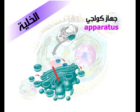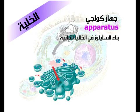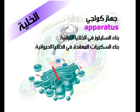جهاز كولجي. وهو جهاز إفرازي يتكون من أكياس مسطحة تعرف بالصهاريج، يسهم في الخلايا النباتية في بناء السليلوز، أما في الخلايا الحيوانية فيعمل على بناء السكريات المتعددة.